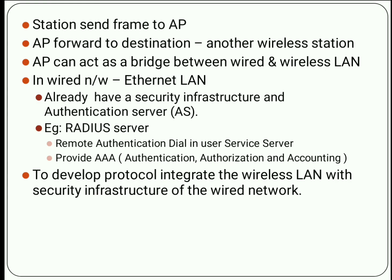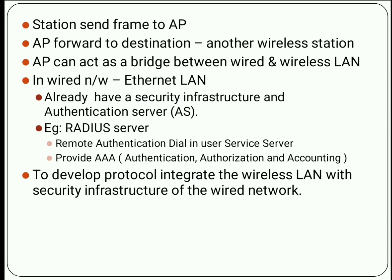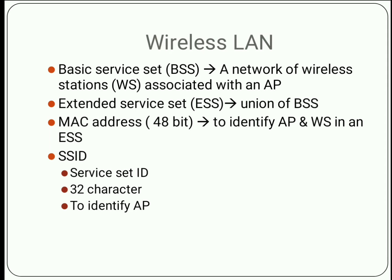In the wired network, it usually uses an Ethernet LAN which includes a security infrastructure and an authentication server. Here we are using the RADIUS server as the authentication server. The RADIUS server performs the three A's: authentication, authorization, and accounting. We need to develop a protocol that integrates the wireless LAN network and performs the whole security infrastructure of the wired network.